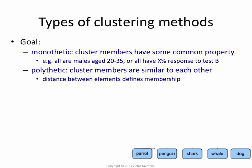A polythetic cluster is different. Individuals in a polythetic cluster are in the same cluster because they're all similar to each other in general, but you can't put a finger on what 'similar' means. There isn't any one property that is common to all of them.